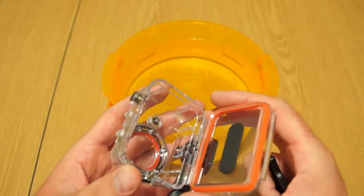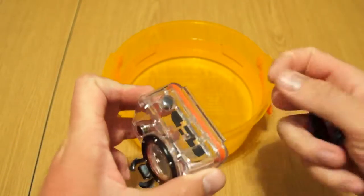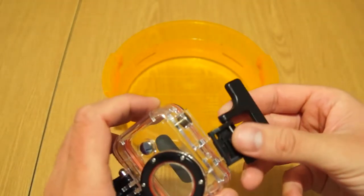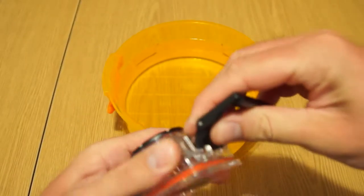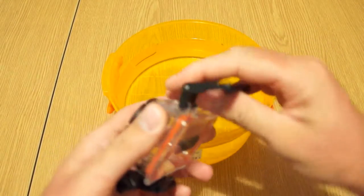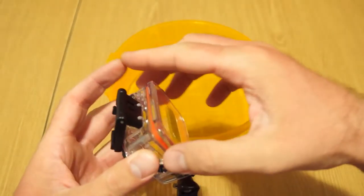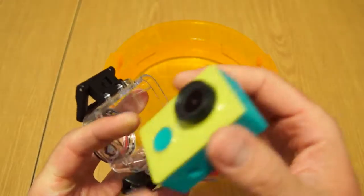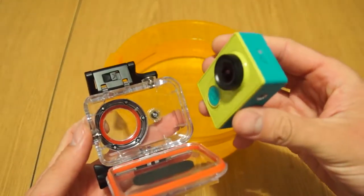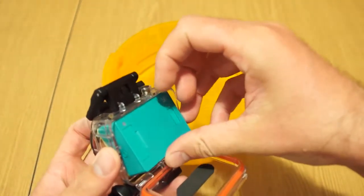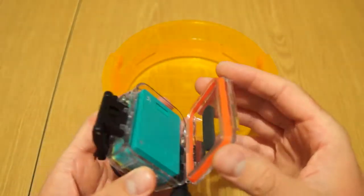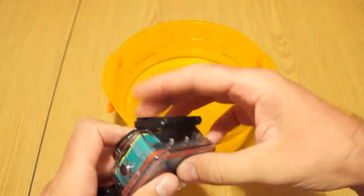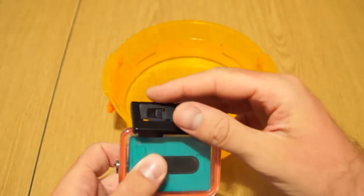So just let me put this one back in so you can see how it closes on the actual camera. This is the camera, as you can see it fits quite easily. It has a small foam pad here which keeps it nice together so there is no chance of movement.